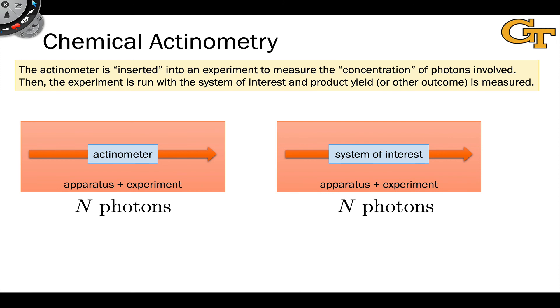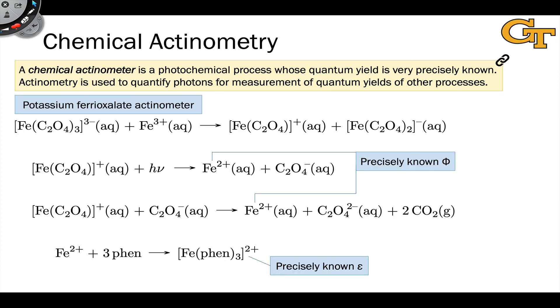An actinometer provides you with a precisely calibrated connection between a chemical outcome, for example, the yield of Fe2+ in this ferioxalate decomposition, and the number of photons impinging on the system to make that happen.